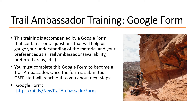This training is accompanied by a Google Form that contains questions to help us gauge your understanding of the material and your preferences as a Trail Ambassador, like your availability and preferred areas to volunteer. You must complete this Google Form to become a Trail Ambassador. Once the form is submitted, GSEP staff will reach out to you about next steps. You can find the Google Form at bit.ly/newtrailambassadorform and at gsenm.org/volunteer.